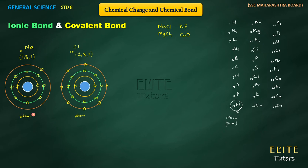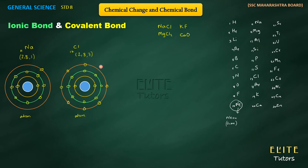One atom is sodium and one atom is chlorine. The rule is: if an atom has 1, 2, or 3 electrons in its outermost orbit, it tries to donate those electrons. Sodium has 1 electron in the outermost orbit, so the sodium atom donates that electron. After donation, sodium has the electronic configuration 2, 8 — like the noble gas neon.